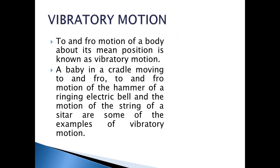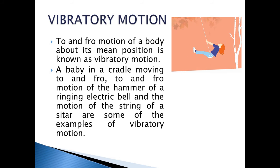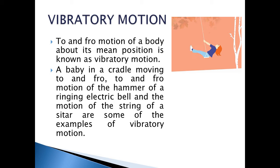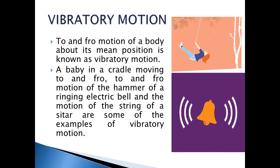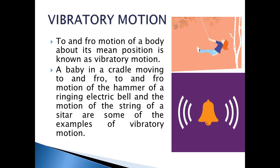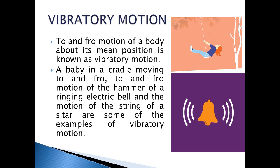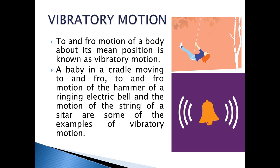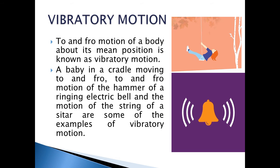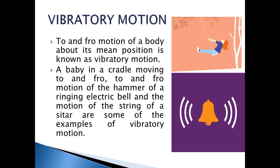Vibratory motion: to and fro motion of a body about its mean position is known as vibratory motion. A baby in a cradle moving to and fro, the motion of the hammer of a ringing electric bell, and the motion of the string of a sitar are some examples of vibratory motion.